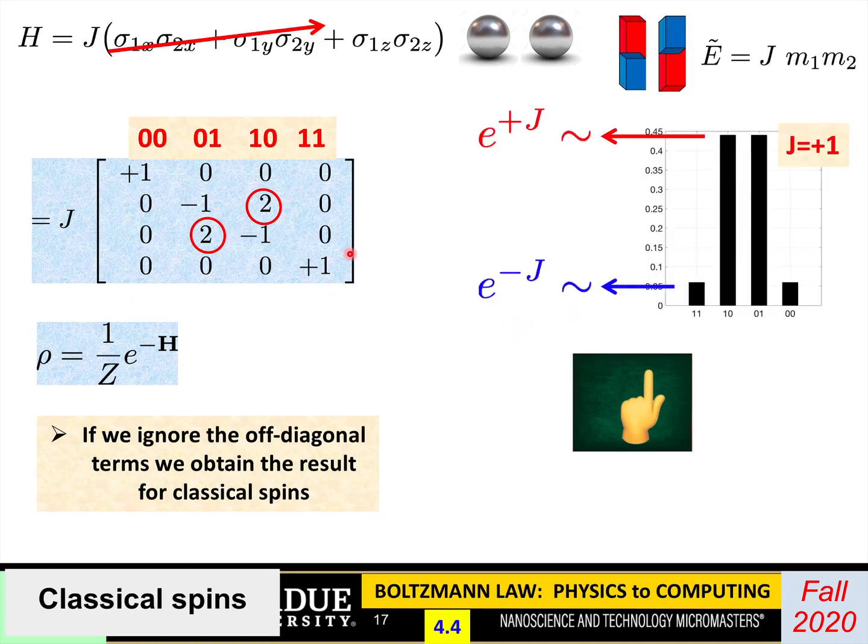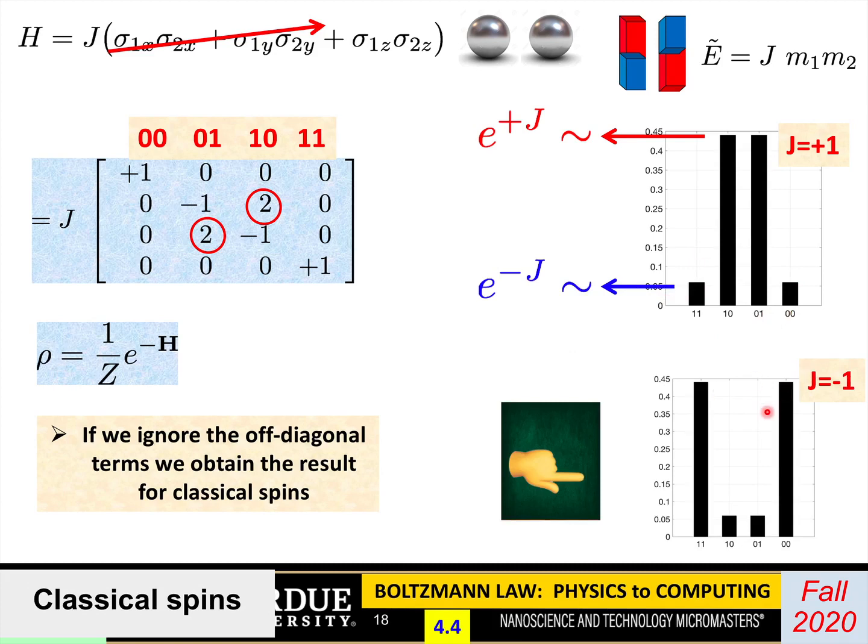So in this limit, when you have ignored the sigma_x and the sigma_y terms, we just get what we'd have got in the classical case. What it shows is that 0,1 and 1,0, the height would be e to the power plus J, which means if J is a positive quantity, these would be the tall peaks. The 0,0 and 1,1 would be e to the power minus J. If J were negative, then the roles would be reversed. These are probabilities, so finally, you have to normalize it so they all add up to 1. This is exactly what you'd have got from classical spins. That's what you'd get from the quantum theory if you ignore the off-diagonal terms.